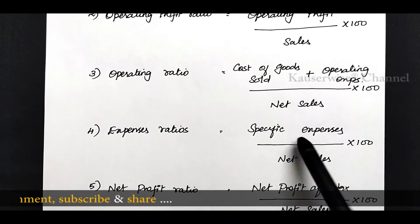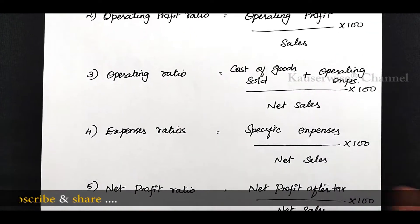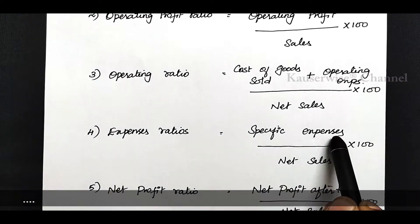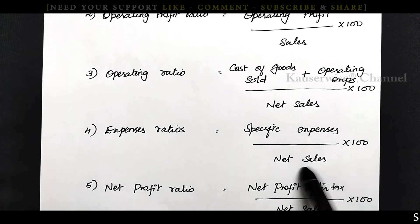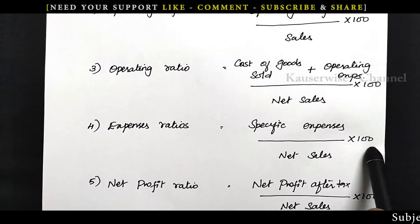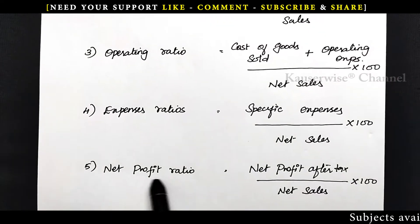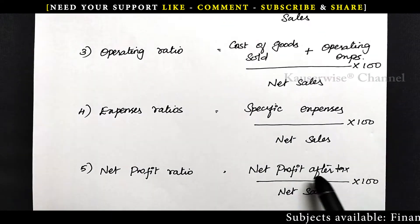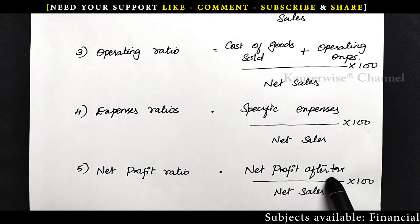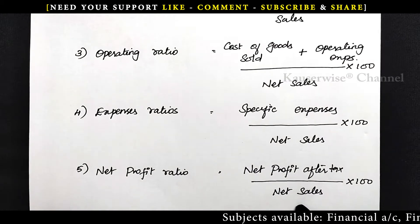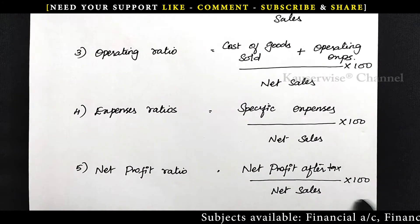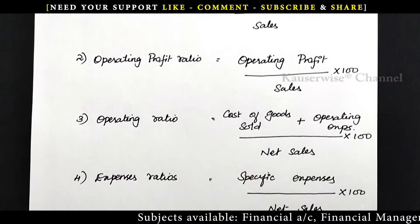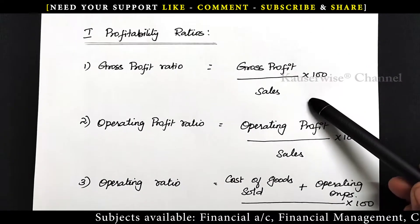The next one is net profit ratio. The formula is net profit after tax divided by net sales into 100. These are the 5 profitability ratios based on sales.